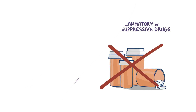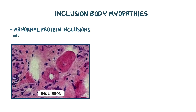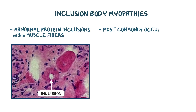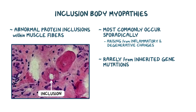As a quick recap, inclusion body myopathies are a group of muscle diseases characterized by the presence of abnormal protein inclusions within muscle fibers. They most commonly occur sporadically, arising from both inflammatory and degenerative changes, and rarely, this results from inherited gene mutations.